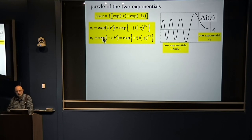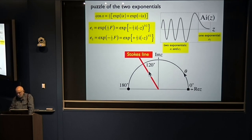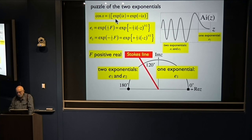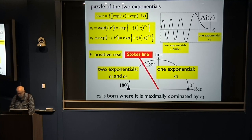He realized that if you go around in the complex plane from the dark side to the bright side, this second exponential must appear over a certain line. That line has the property that f is positive real, so what was a small exponential has become a big exponential. The new exponential is actually very small at this place — it sneaks in, hidden behind the large one. Then as you go round to the negative axis, they both become of equal magnitude, they interfere, and you get the cosine oscillations. So it's born where it's maximally dominated by the other exponential.